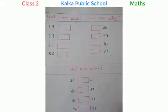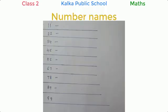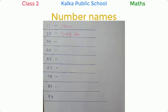I hope you are all enjoying this. Now move to number names. When numbers are written in words, they are called number names. Say 11. 11 would be written in words as E-L-E-V-E-N. Now 22. 22 would be written as T-W-E-N-T-Y T-W-O.